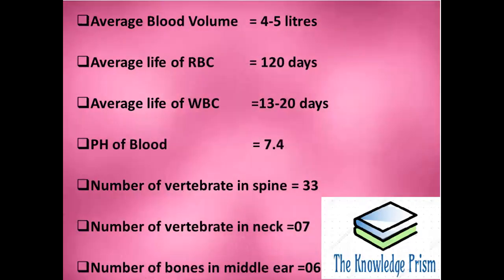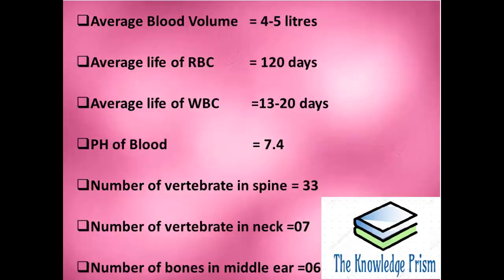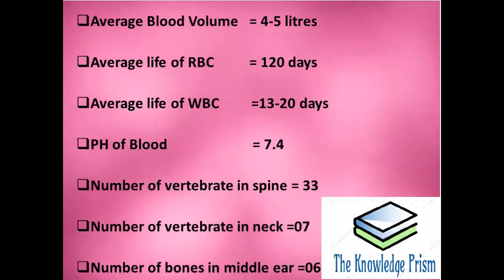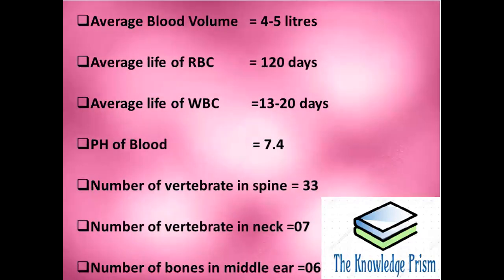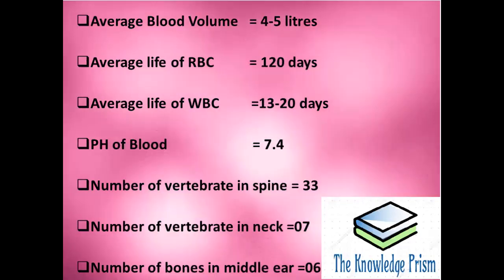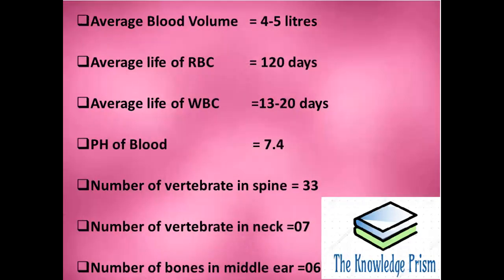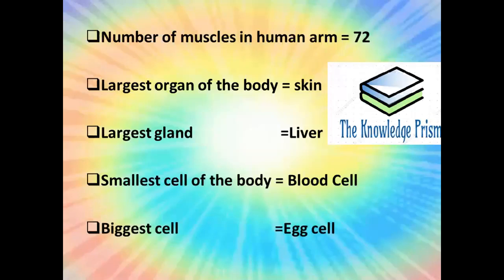Number of vertebrae in spine is 33. Number of vertebrae in neck is 7. Number of bones in middle ear is 6. Number of muscles in human arm is 72.